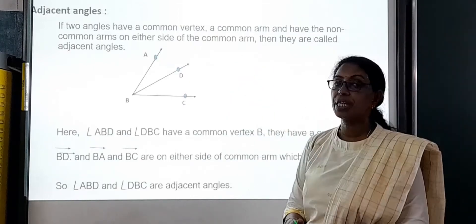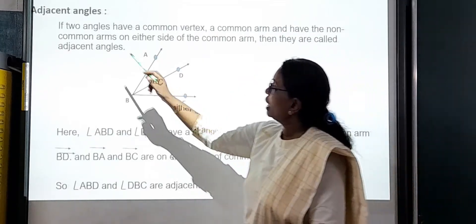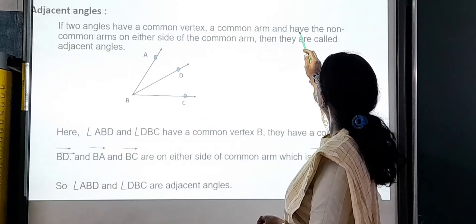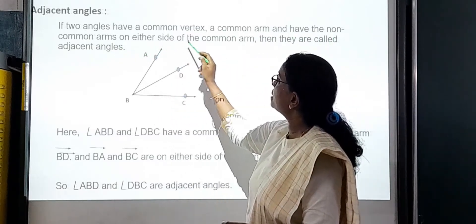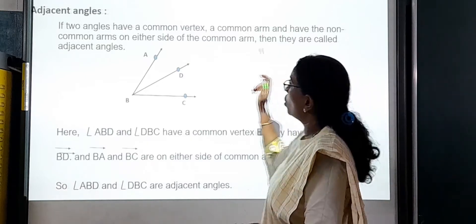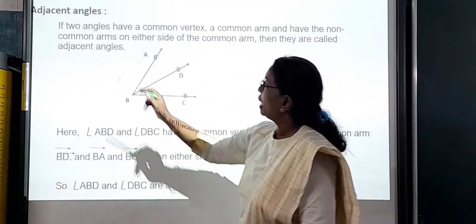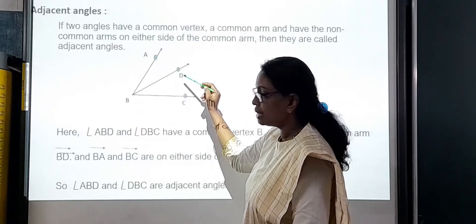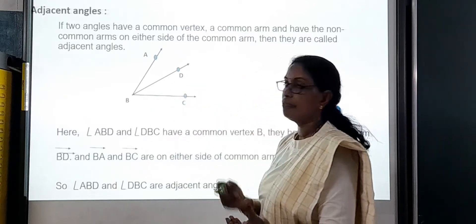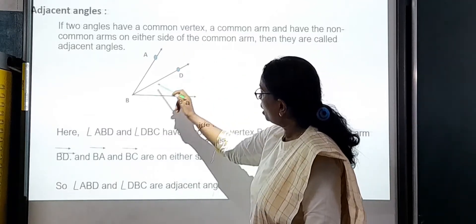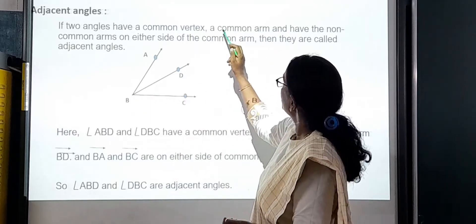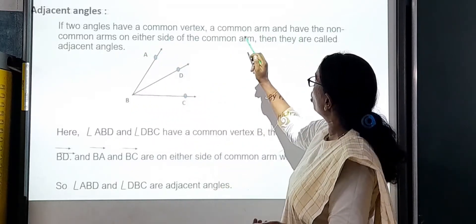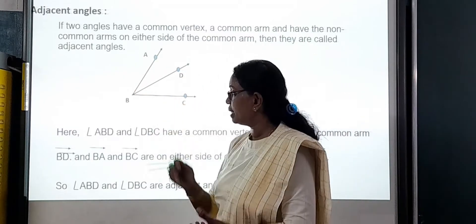And next one is the adjacent angle. If two angles have a common vertex and a common arm, with the non-common arms on either side of the common arm, then they are called adjacent angles. For example, angle ABD and angle DBC share common vertex B.